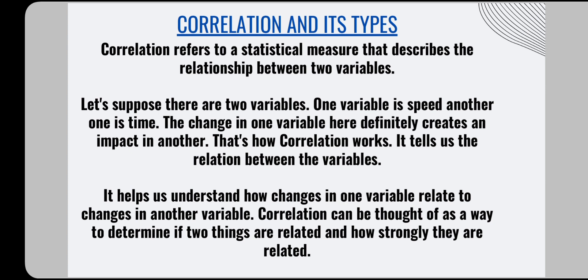So correlation can be thought of as a way to determine if two things are related and how strongly they are related. It helps us understand how two variables are related to each other — how a change in one affects the other, and how strongly that effect is felt.